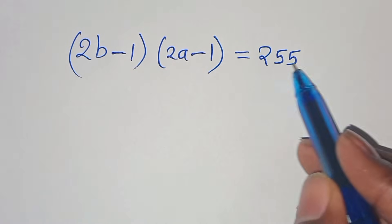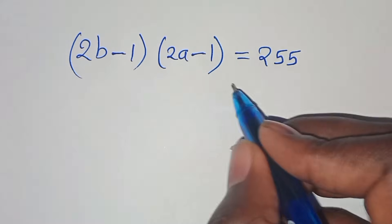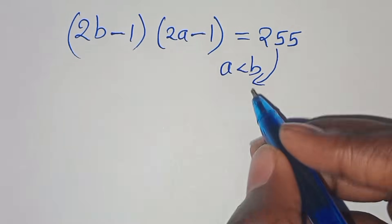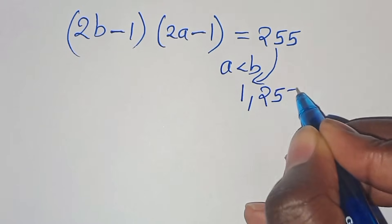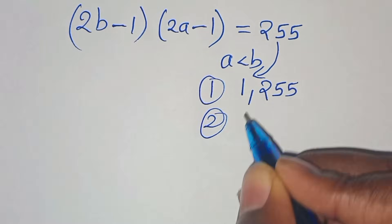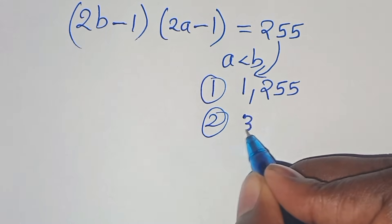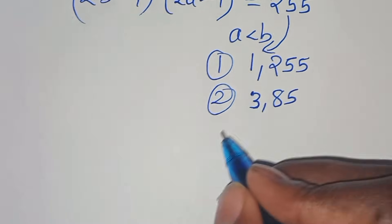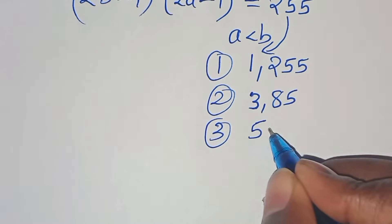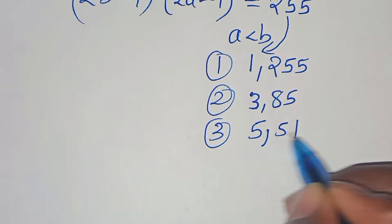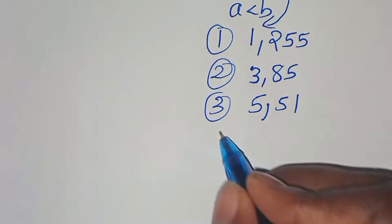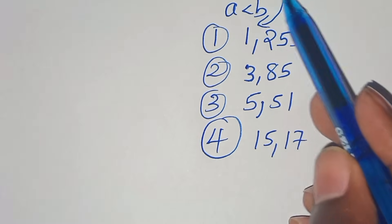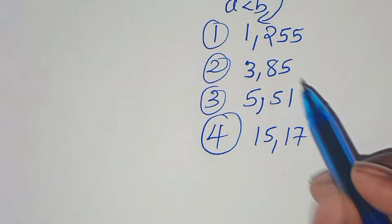Now let's get the prime factor pairs of 255, given that a is less than b. The factor pairs are: 1 times 255, 3 times 85, 5 times 51, and 15 times 17, each giving a value of 255.